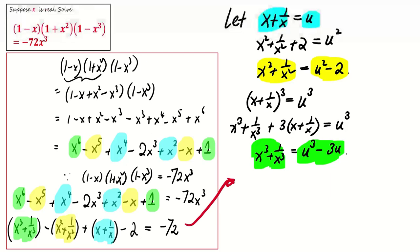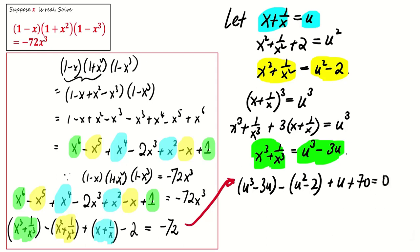Substituting all the color-coded terms into the equation, we get u cubed minus 3u minus (u squared minus 2) plus u plus 70 equals 0, which simplifies to u cubed minus u squared minus 2u plus 72 equals 0.